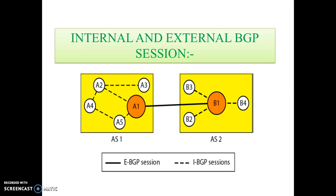This is the internal and external BGP session. The external BGP session is shown by two autonomous systems, AS1 and AS2 — the interconnection between AS1 and AS2 is defined by the external BGP session. The interconnection between nodes within AS1, where nodes A1, A2, A3, A4, and A5 are connected in the same autonomous system, is called the internal BGP session.